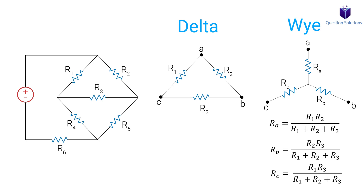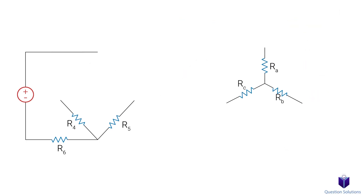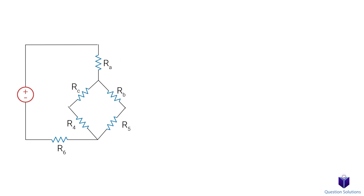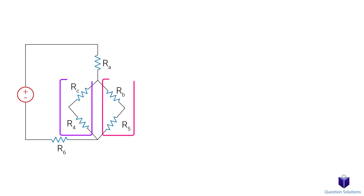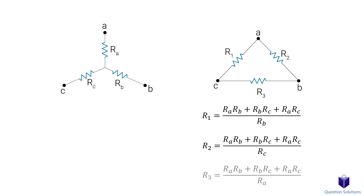Once we get the RA, RB, and RC values, we can replace the delta on our circuit with the Y. Now it's much easier to combine resistors since these two are in series. This can be done in the opposite direction too, so we can go from a Y to a delta. Let's look at those equations. Don't be alarmed — these are just as easy to figure out as the other ones.